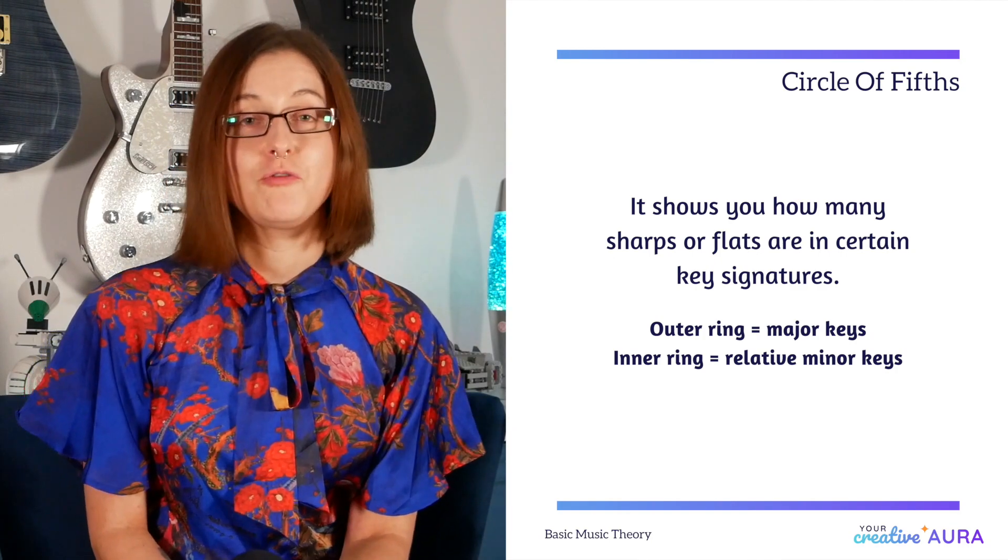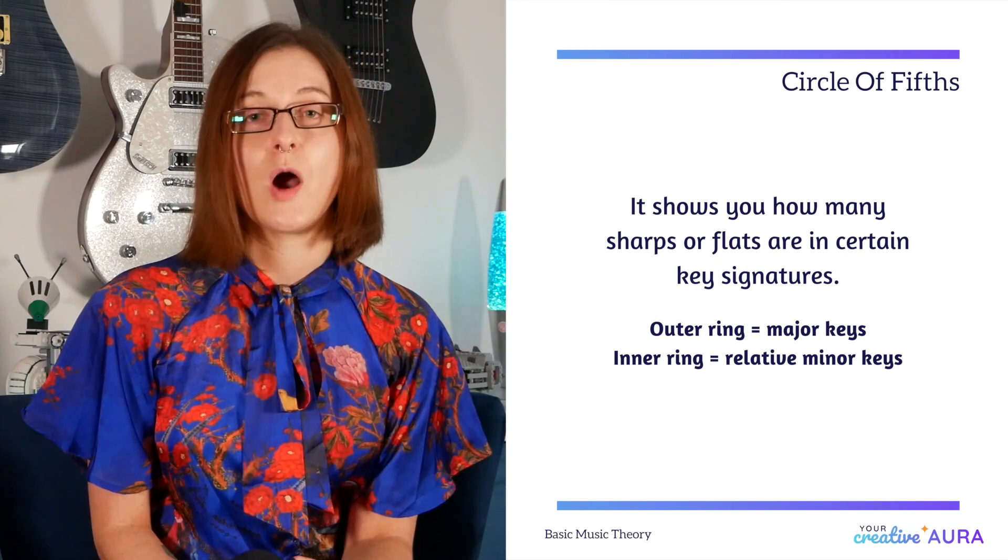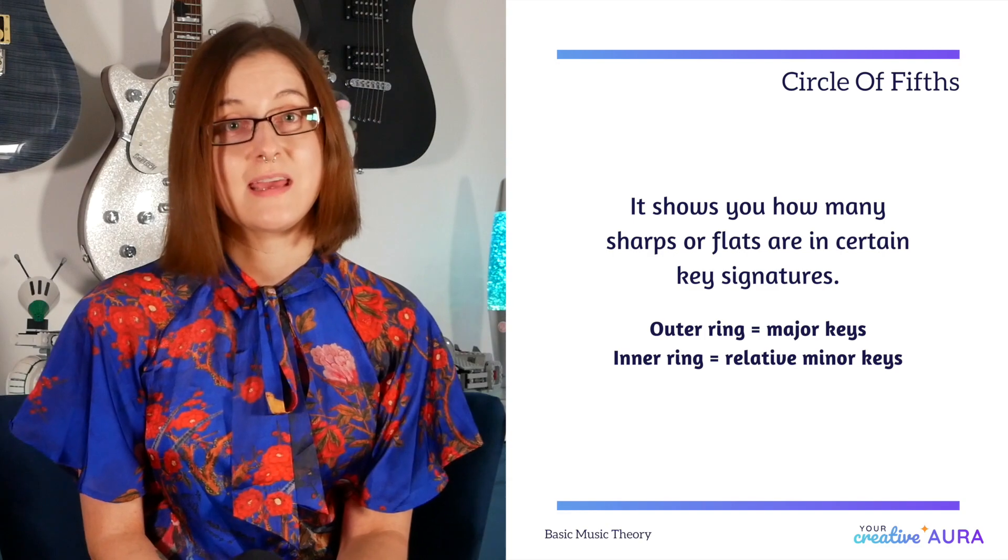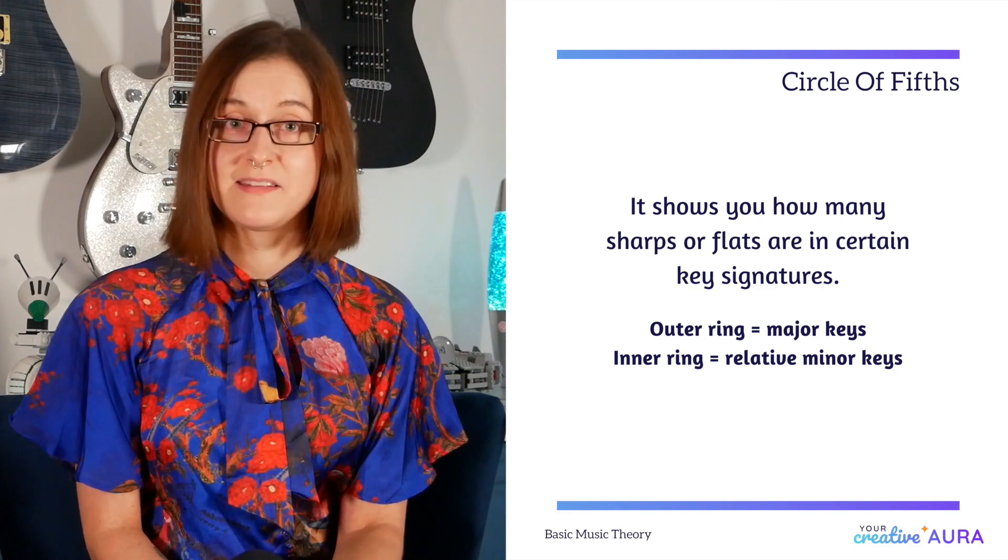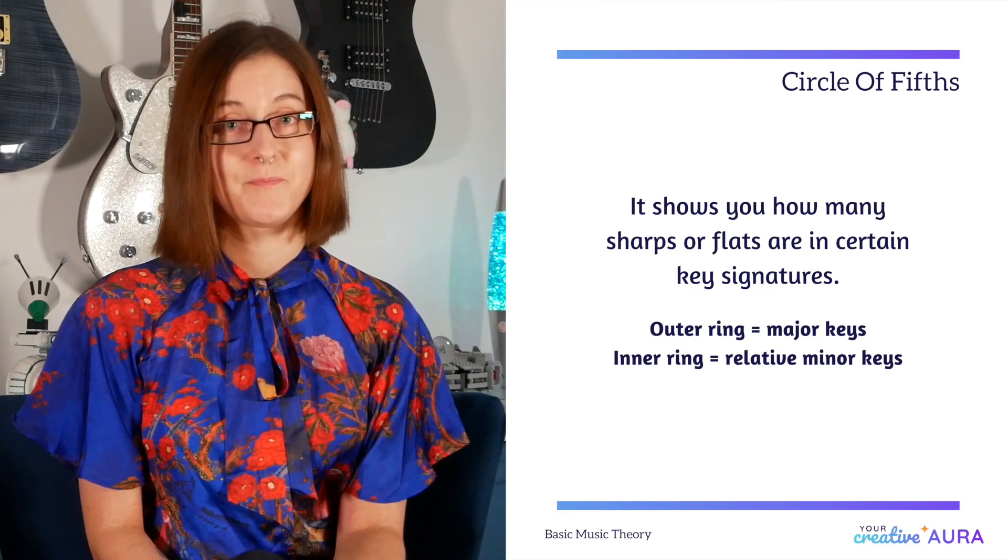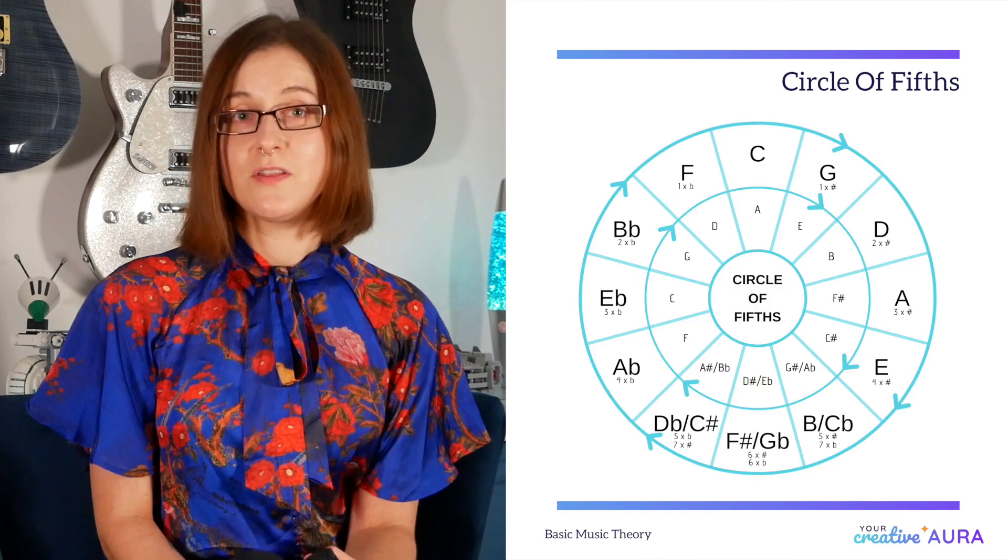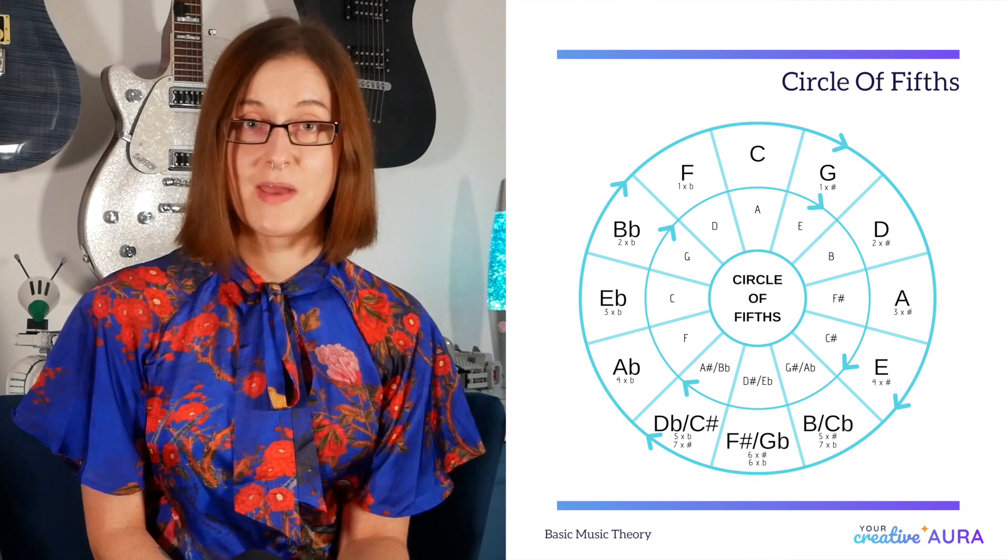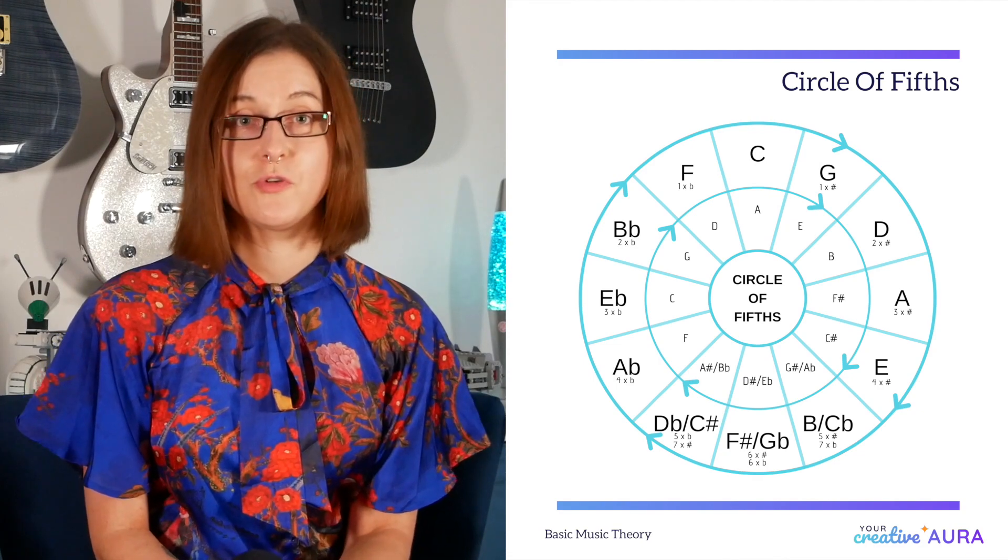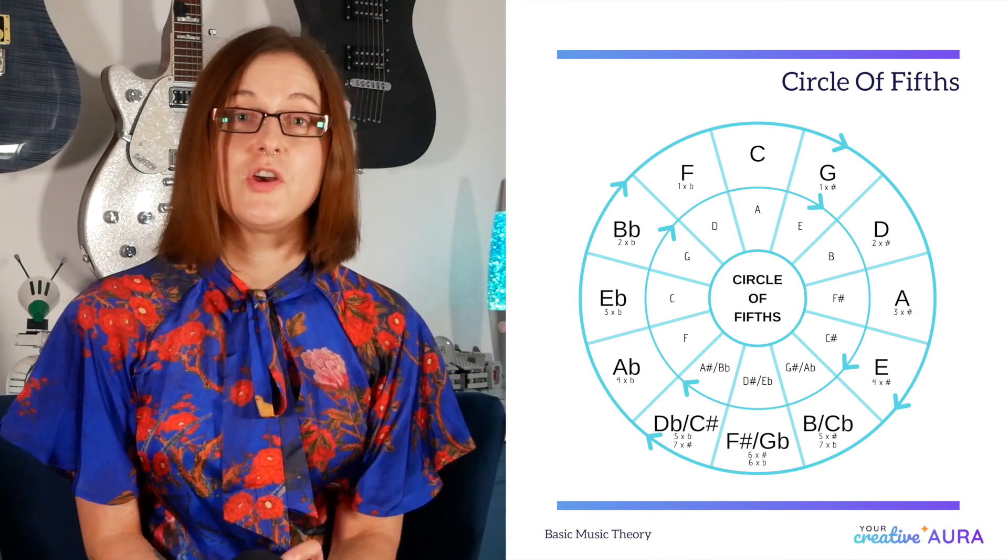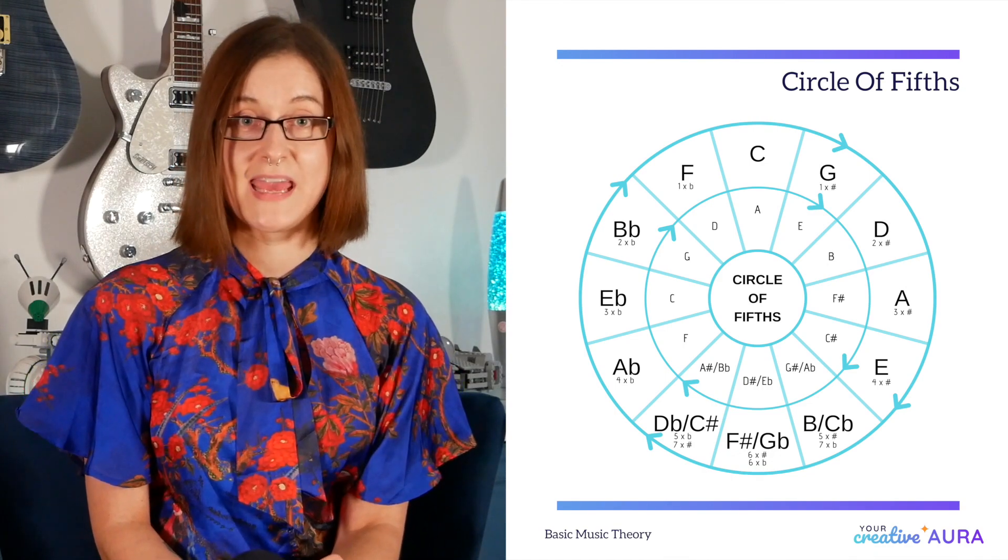The outer rings are your major keys, along with how many sharps or flats present, and the inner ring is the major key's relative natural minor. So here we have it. So when we start at the top, we're at C major, which has no sharps or flats, and as we go round clockwise, we add a sharp note each time we enter a new key.